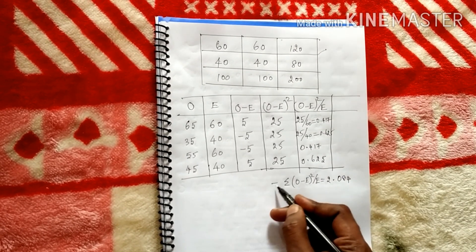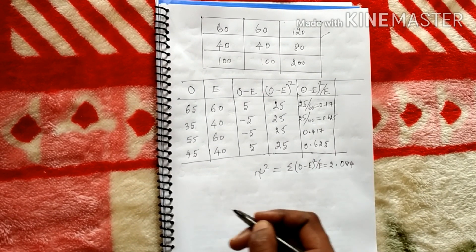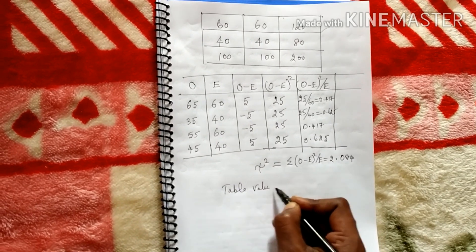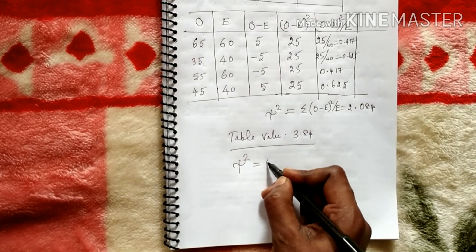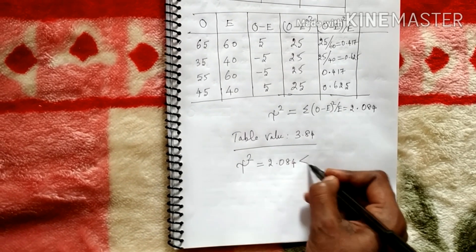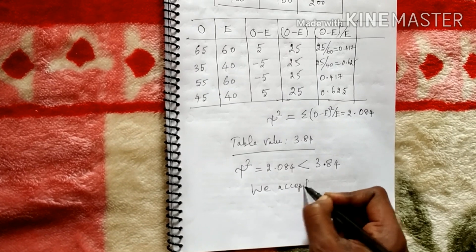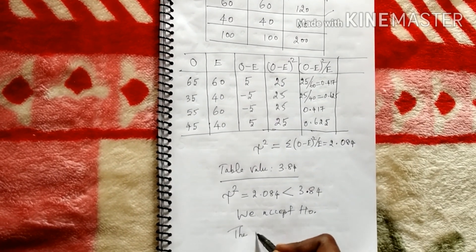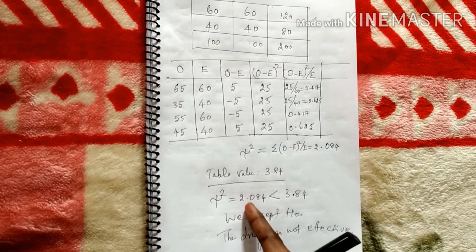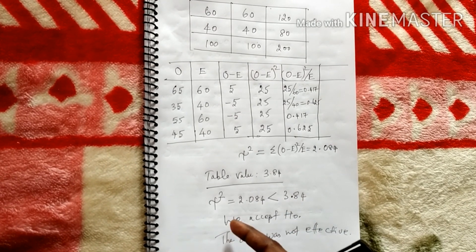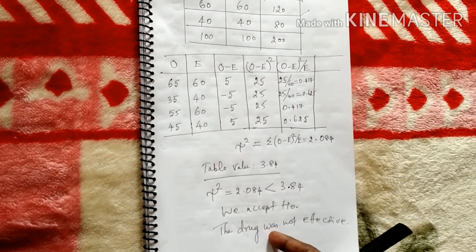The calculated chi-square value is 2.084. The table value is 3.84. Since 2.084 is less than the table value of 3.84, we accept the null hypothesis. The conclusion is that the drug was not effective, because the calculated value is less than the table value and therefore we accept the null hypothesis, which states there is no difference.